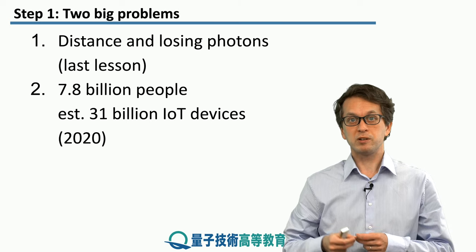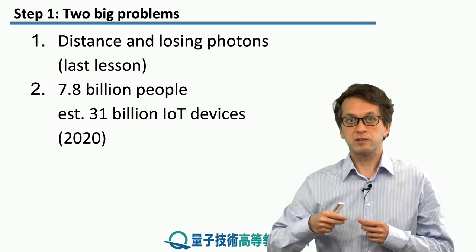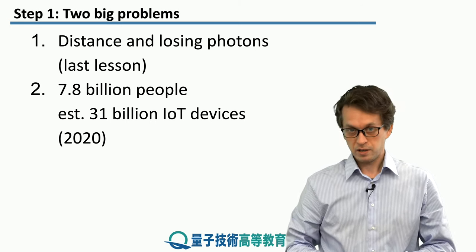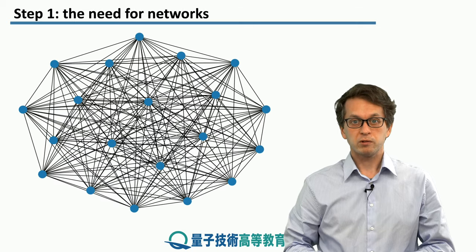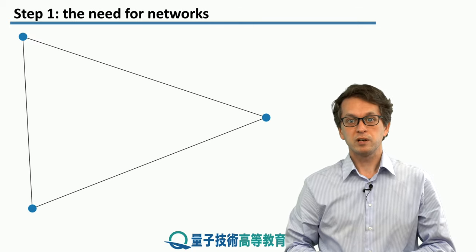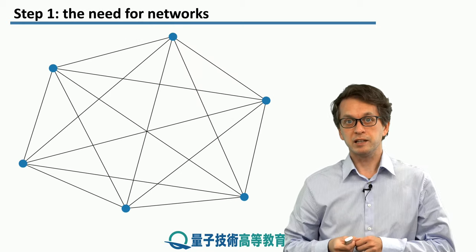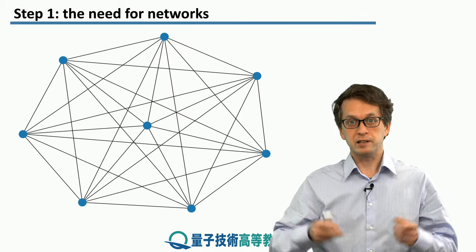One way is to actually establish a direct connection between each device that is present in the network. In other words, we could have something like a complete graph. If we start with 2, they are just connected by a single link. If we have 3, we have 3 links.